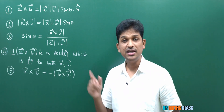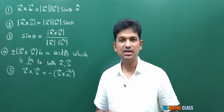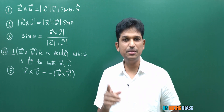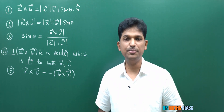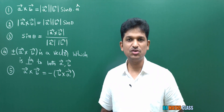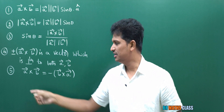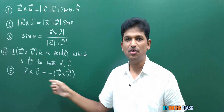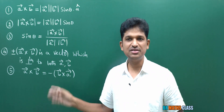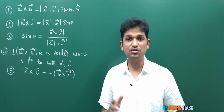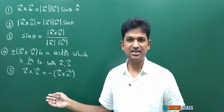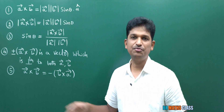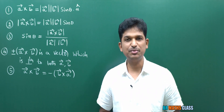In dot product, A bar dot B bar equals B bar dot A bar. But in cross product it is not like that. A bar cross B bar equals minus of B bar cross A bar. This is a formula we use very frequently while doing exercise problems: A bar cross B bar equals minus of B bar cross A bar.